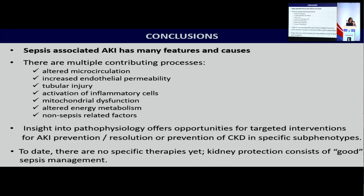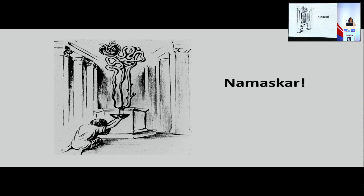In conclusion, sepsis-associated acute kidney injury has many features and many different causes. There are many potential contributing processes involved — from disturbed microcirculation, to endothelial dysfunction, to mitochondrial dysfunction — but also non-sepsis-related factors like drugs and renal congestion. Further insight will help us identify those who are more likely to respond to a particular therapy. But until then, the management of sepsis-associated AKI consists of good management of sepsis, and there is no specific treatment at the moment. Thank you for your attention.